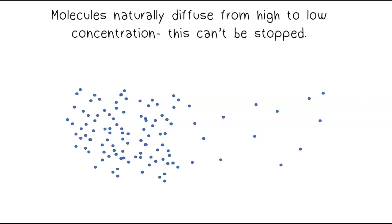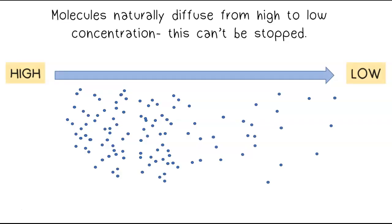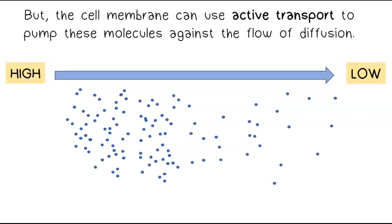Molecules naturally diffuse from high to low concentration. This can't be stopped, but the cell membrane can use active transport to pump these molecules against the flow of diffusion.